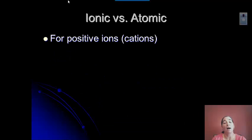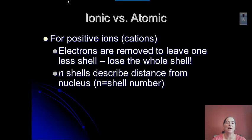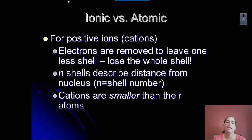If you look at positive ions or cations, electrons are removed, so they lose a whole shell. And when that happens, remember that the number of shells, that row number as you go down the periodic table, it describes how far those outer electrons are from the nucleus. And so the cations are actually smaller because you've actually lost a shell of electrons, a shell or an energy level.